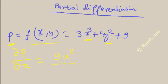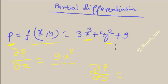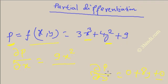Similarly, if you want to differentiate p with respect to y and treat all other variables as constant, that is known as partial differentiation of p with respect to y, written as del p by del y. In this case, you treat y as the variable and everything else as constant. Differentiation of 3x³ with respect to y will be 0, differentiation of 4y² gives 8y, and differentiation of 9 will be 0. So finally, del p by del y is equal to 8y.